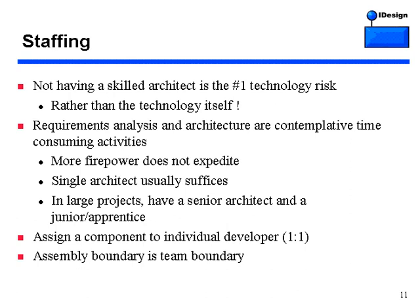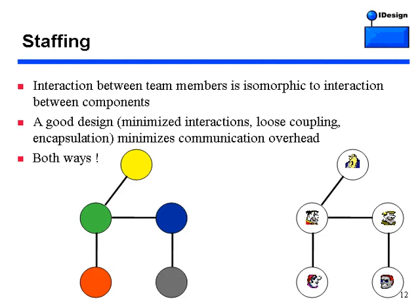One-to-one is really a good idea. I also believe you shouldn't span assemblies across teams — even though technically you can do it, it's impractical from a management point of view. Why do we like a good design? Because we have just about the right number of components and interactions. If you accept that components are mapped to developers in a one-to-one ratio, then the interaction between team members is isomorphic to the interaction between individual components.